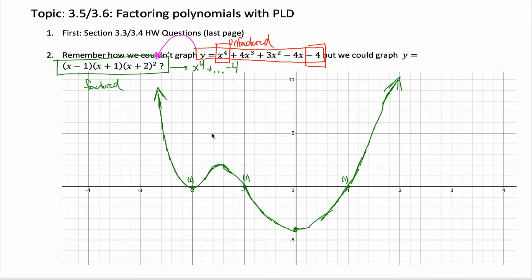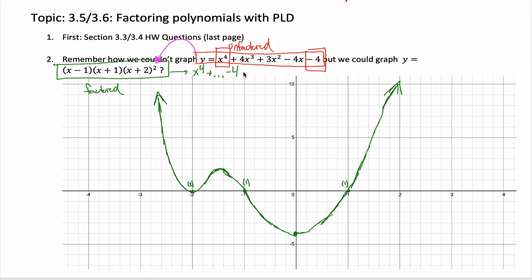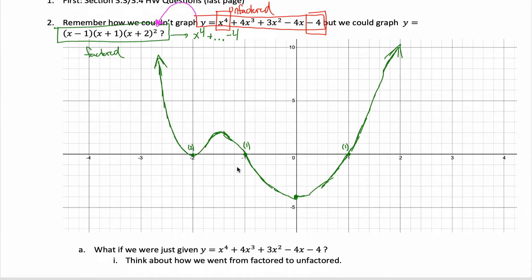But that begs the question: how do you go from the unfactored form to the factored form, and why didn't I just teach you this earlier? The reason is there's a lot to know about polynomials, and going from the unfactored form to the factored form is really challenging. So why not start somewhere a little bit easier — namely the factored form — learn all the characteristics from that, and then learn to go from unfactored to factored? We kind of start in the middle, go to the end, then go from start to middle, so we know the whole process.